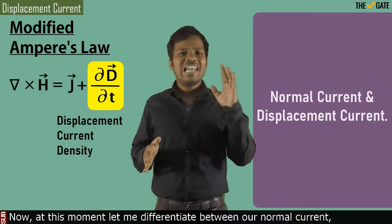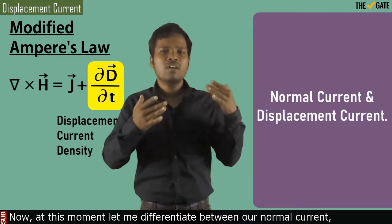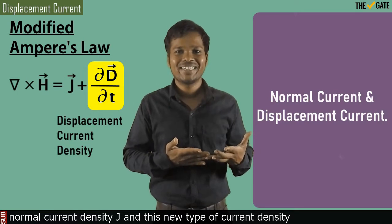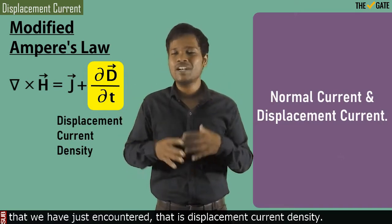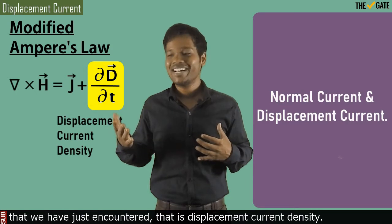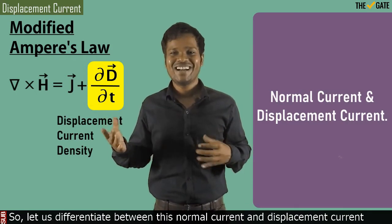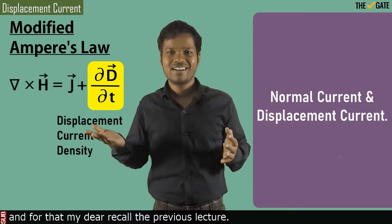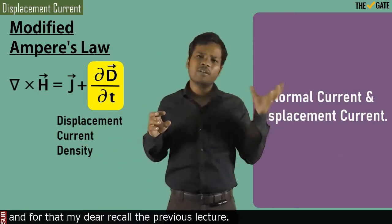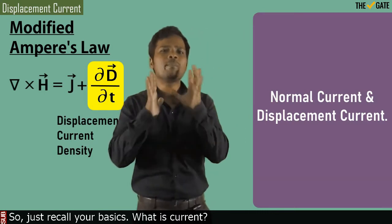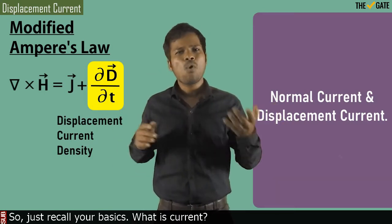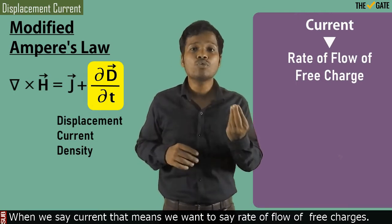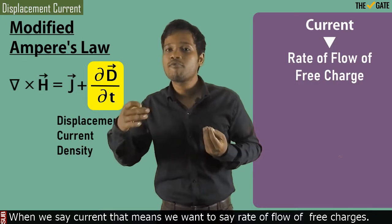At this moment, let me differentiate between our normal current or normal current density J and this new type of current density that we have just encountered, that is displacement current density. So let us differentiate between normal current and displacement current. Just recall the previous lectures or recall your basics. What is current? When we say current, that means we want to say rate of flow of free charges.